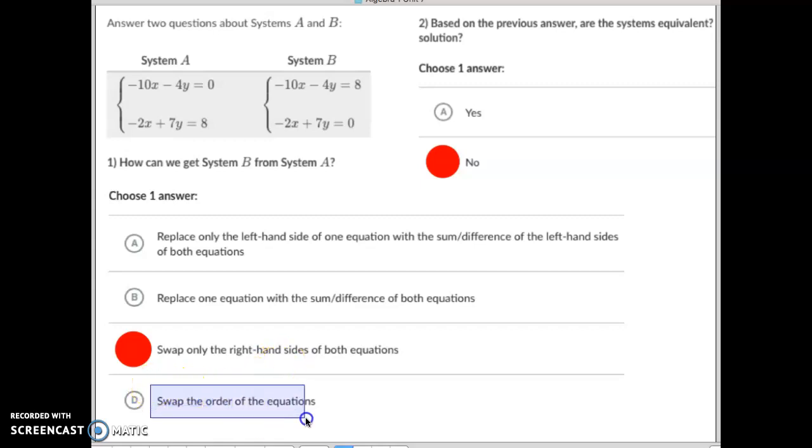And then letter D, did they swap the order of the equations? Meaning, did this equation become this equation and vice versa? And no, that's not what they did. So hopefully you understand from this. This is going to be a semi-tricky one.